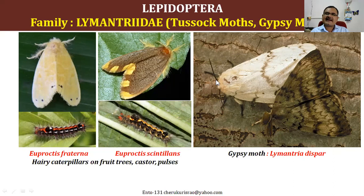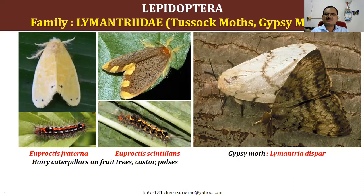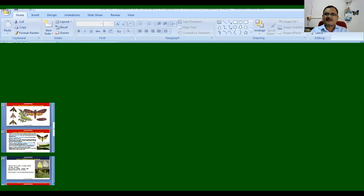The male has highly developed antennae to smell chemical pheromones released by females. These hairy caterpillars are very commonly seen on fruit trees, castor and pulses and many other crops. The gypsy moth is a very dangerous pest across the globe. With this we complete today's class and tomorrow we will continue with other families.